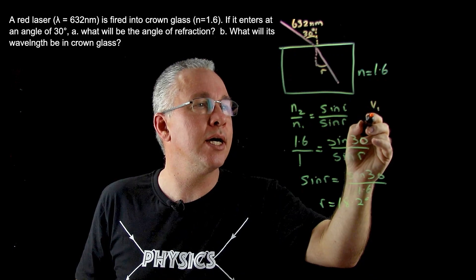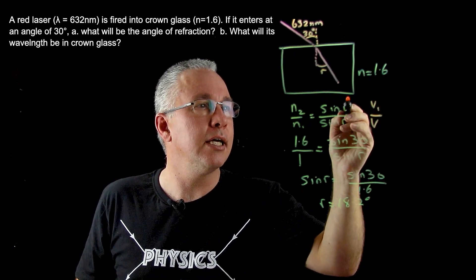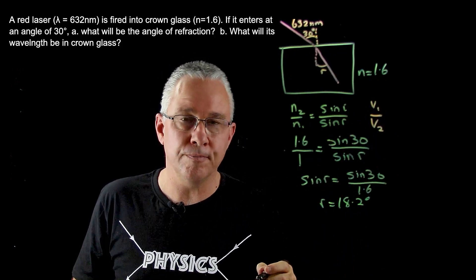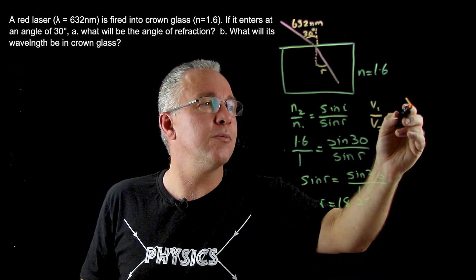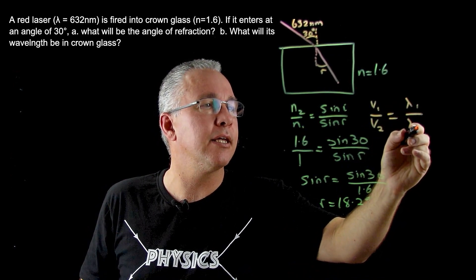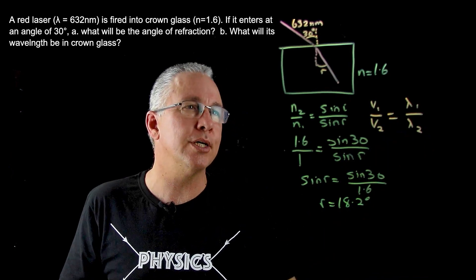That is in this case V1 over the velocity of the light inside, which is V2. And that is also equal to the wavelength outside over the wavelength where you're going to.